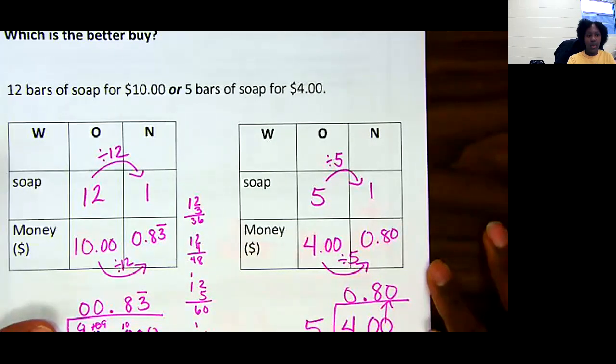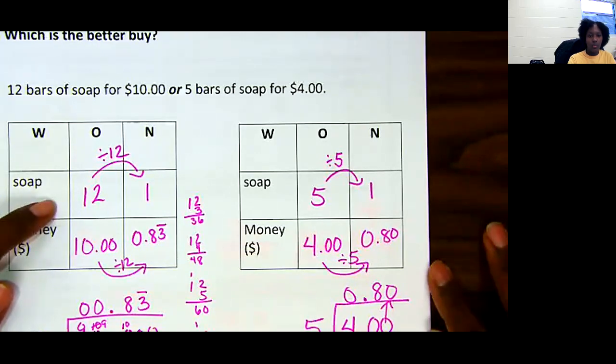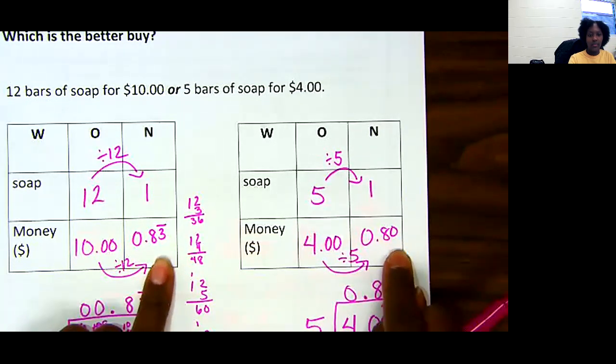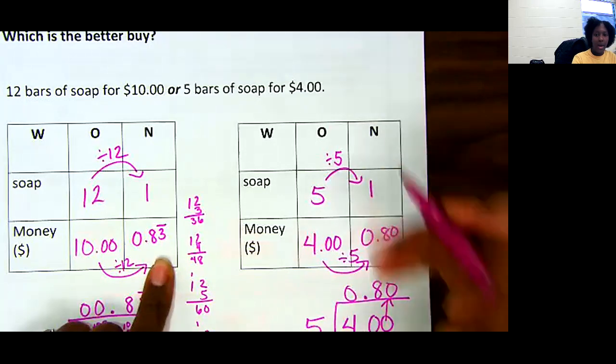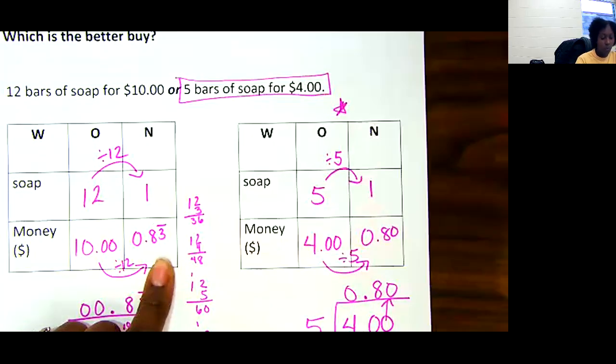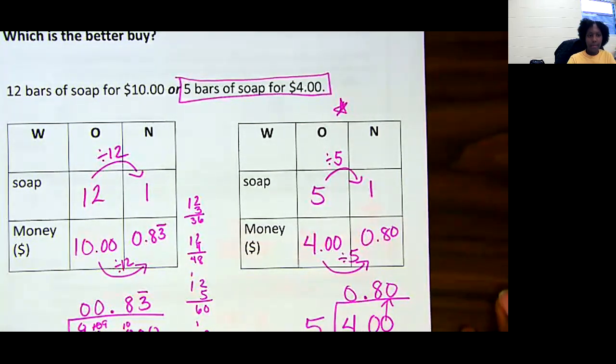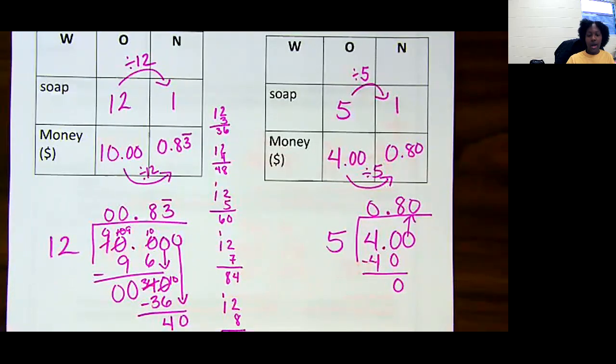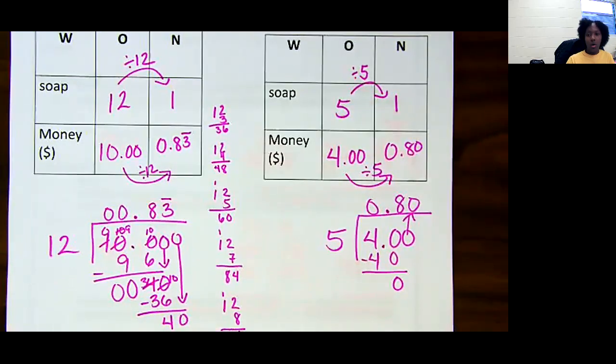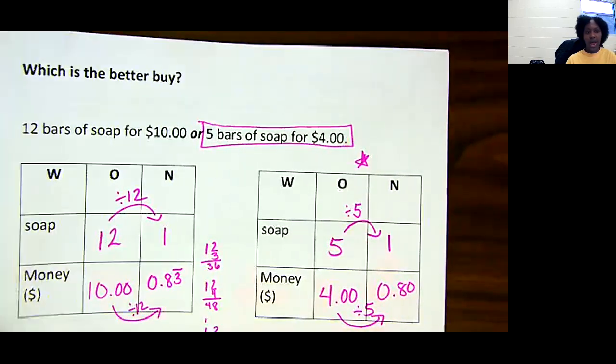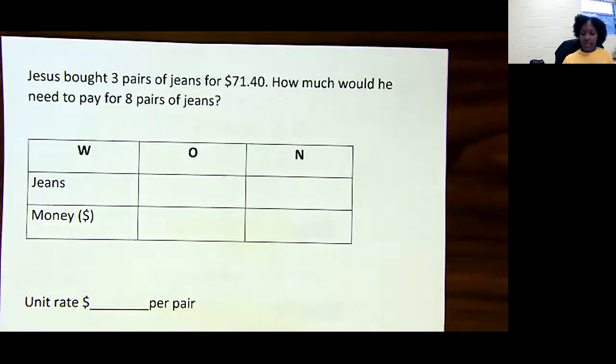So which one's the better buy? Buying 12 bars of soap at 83 cents or buying 5 bars of soap at 80 cents? Very good. Buying the 5 bars of soap is the better buy for $4. All right. Again, we use division because we're looking for the unit rate to figure out how much one of something costs, and then I'm able to make a decision as to comparing items.